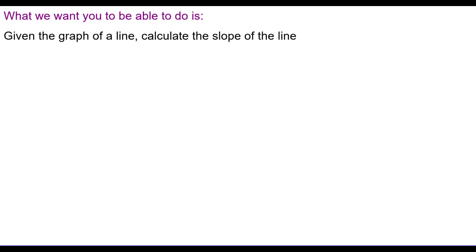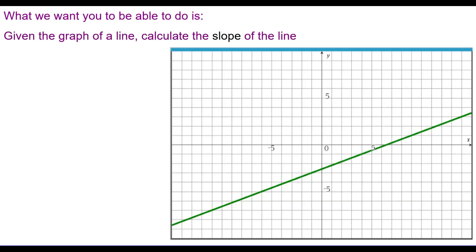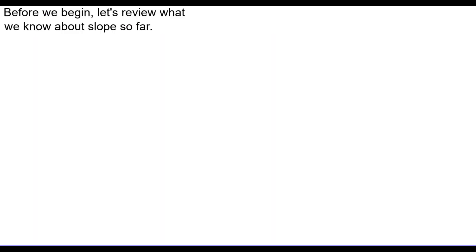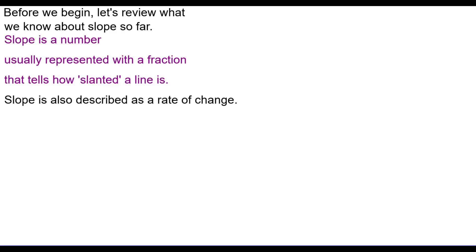What we want you to be able to do is, given the graph of a line, calculate the slope of the line. But before we begin, let's review what we know about slope so far. Slope is a number that's usually represented with a fraction that tells how slanted a line is.